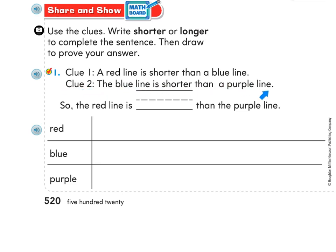We know the blue line is shorter than a purple line, so draw your purple line. When you finish that drawing, go back up and write: so the red line is blank than the purple line. Is it longer or shorter? Remember those are your options: shorter or longer.